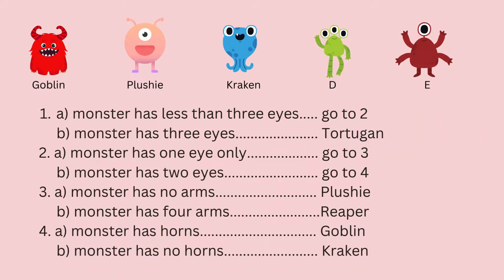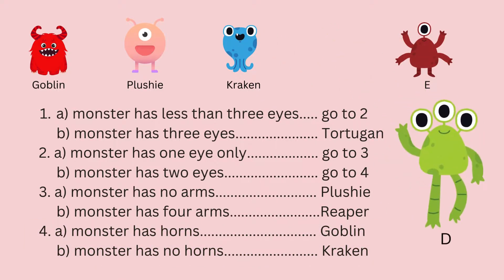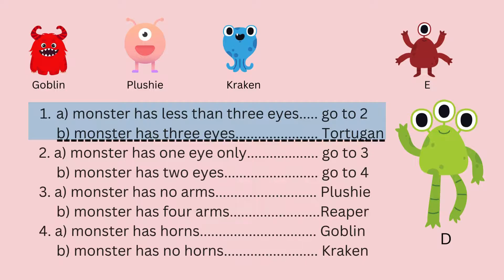Moving on to Monster D, starting at step one: does the monster have three eyes or less than three eyes? Since Monster D has three eyes, we can identify it as Torch.